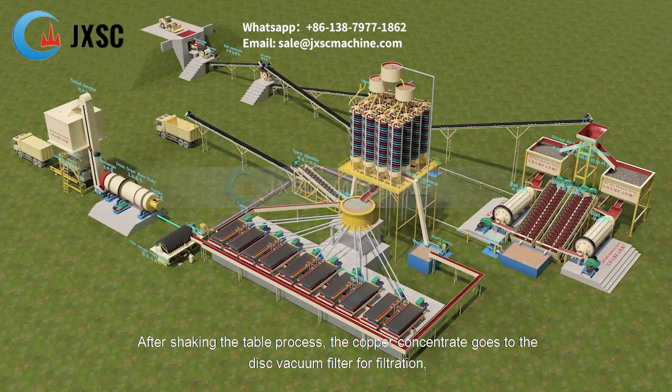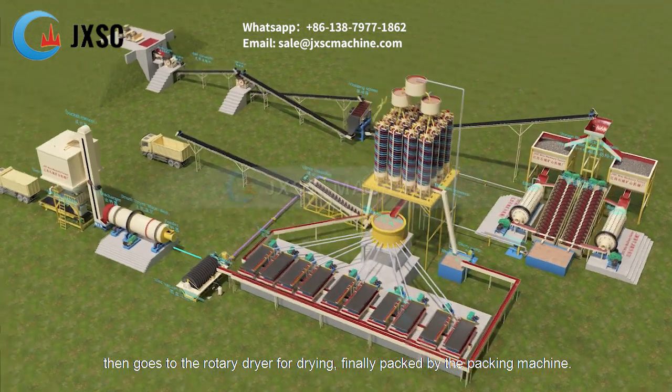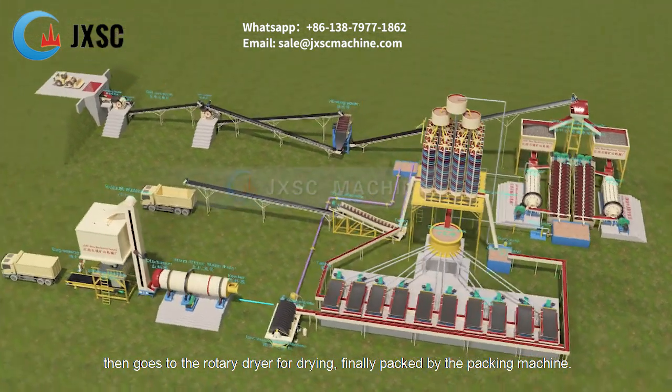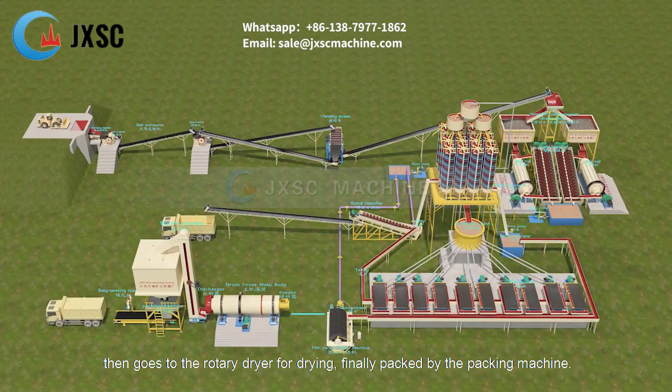After the shaking table process, the copper concentrate goes to a disk vacuum filter for filtration, then to a rotary dryer for drying, and is finally packed by the packing machine.